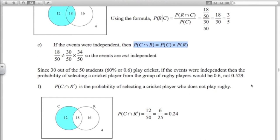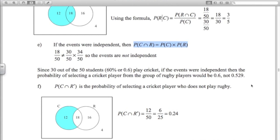And the last one, what's the probability of C and R dash? So that's someone who's a cricket player and not a rugby player. So that's these 12 people here. So 12 out of 50 or 0.24.